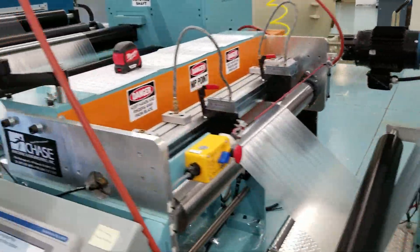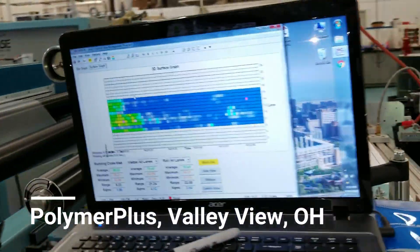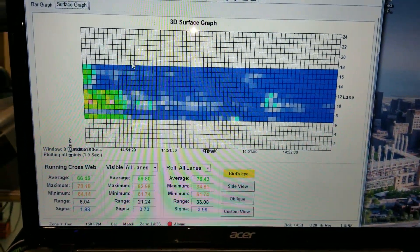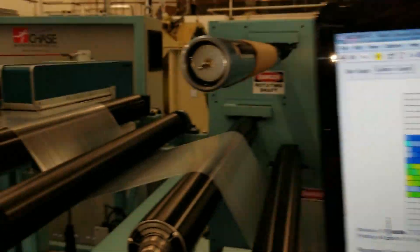Here we are at Polymer Plus in Valley View, Ohio. They have a multi-channel array gauge right now currently measuring the line. You can see the live feed of the line right there.